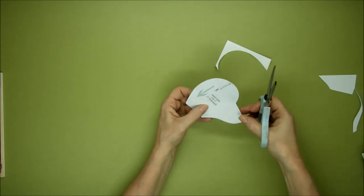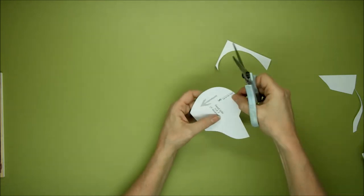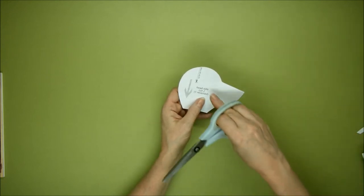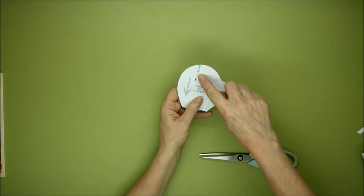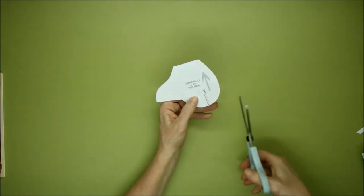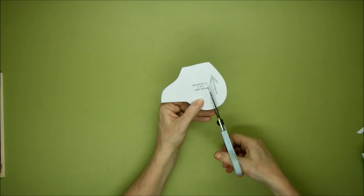There we go. Okay, let's get rid of these little bits. Now as you can see, there's a dotted line here that we're going to cut into, and we're going to use this line for inserting the ears into the side of the head.